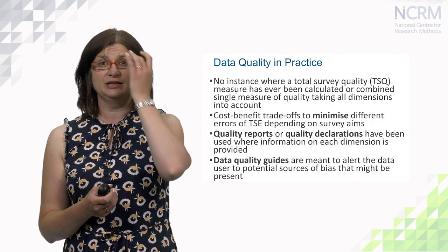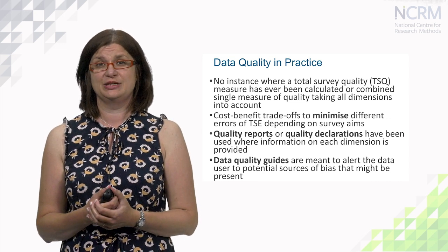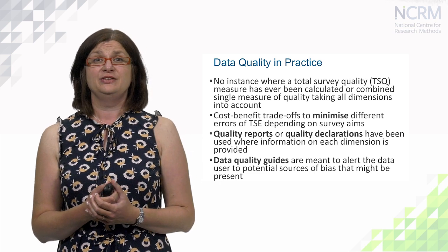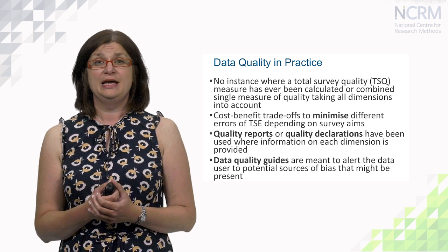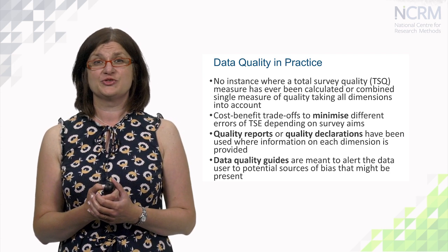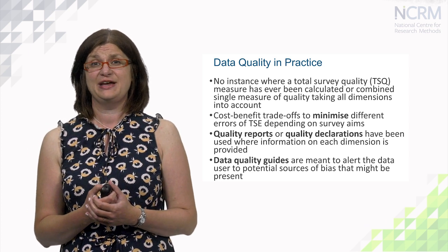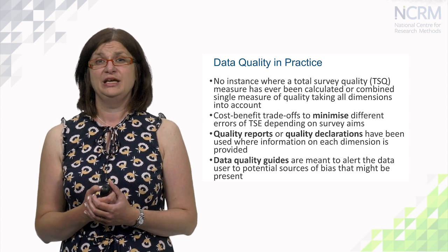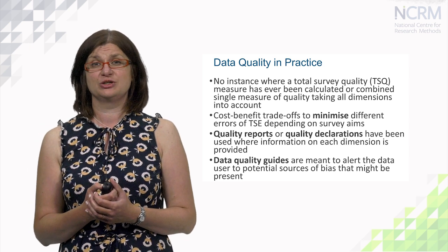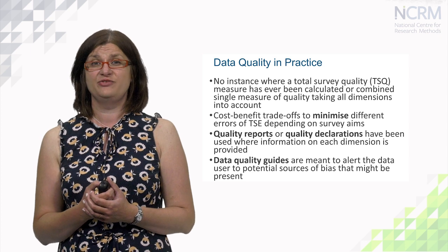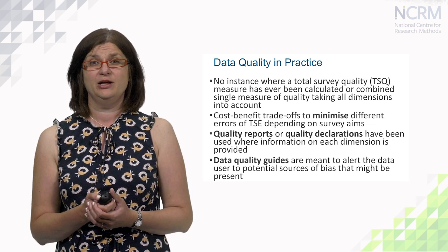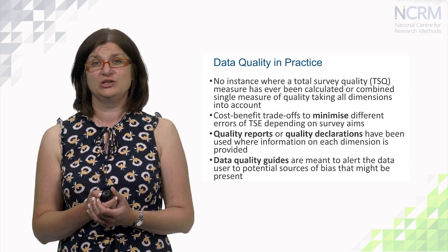There is always a question: is it possible to obtain a single score or single measure of quality taking all dimensions into account? There is no instance where a total survey quality measure has been calculated. The main idea is to minimize different errors, and therefore cost-benefit trade-offs are needed depending on survey aims and budget. Quality reports and quality declarations produced by statistical organizations provide information on each dimension of data quality for users. Data quality guides are meant to alert data users to potential sources of bias, and are very helpful for the data analysis stage so that users can provide reliable results.